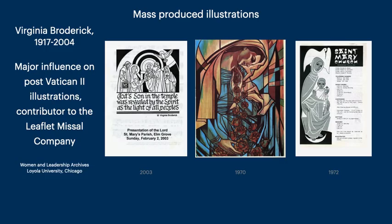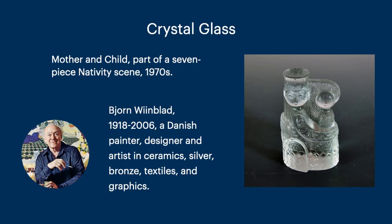Moving backward in time — Virginia Broderick, 1917 to 2004. She had a major influence on post-Vatican II illustrations. She contributed to the Leaflet Missal Company, and her work would be very familiar to Catholics in church bulletins, because in fact a lot of church bulletins still look very much like her work. Crystal glass — this was done by Bjørn Wiinblad, a Danish painter and designer. This was a nativity scene, and this is the Virgin Mary and the child from that seven-piece nativity collection.